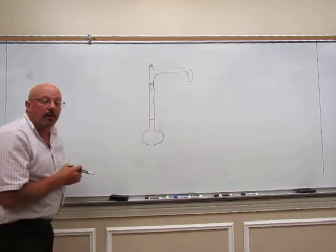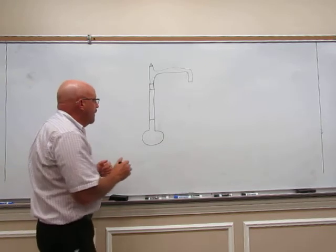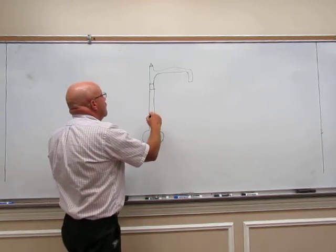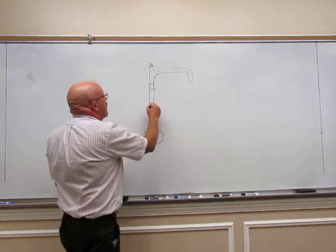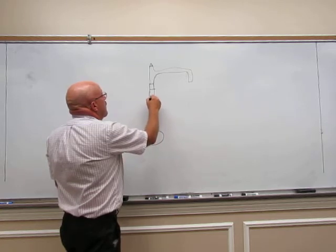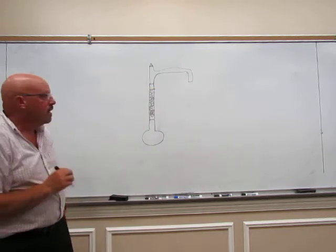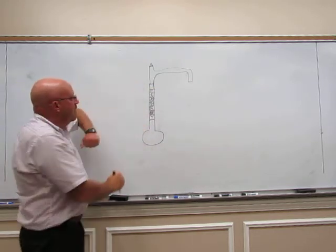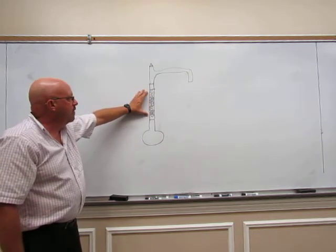And the condensate that's falling back is richer in the higher boiling component. So we can introduce more theoretical plates by putting a longer column on here. Another way we can increase theoretical plates to give it more surface area, and this is what we're going to do this week, we're going to put steel sponge in the column.